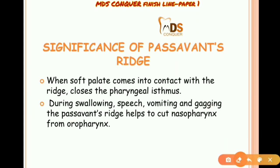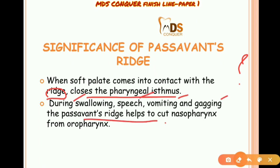The significance of Passavant's ridge: when the soft palate comes into contact with this ridge, it closes the pharyngeal isthmus. Hence during swallowing, speech, vomiting, and gagging, this ridge helps to cut off the nasopharynx from the oropharynx. This is very important and must always be mentioned.